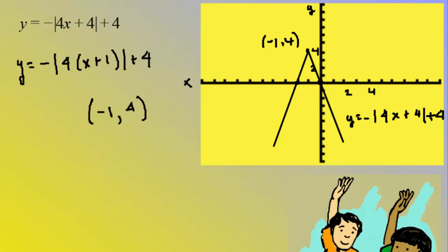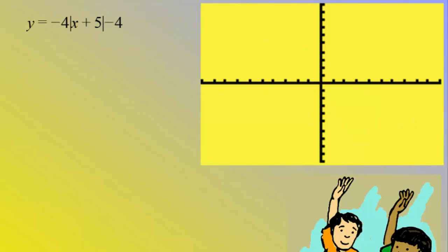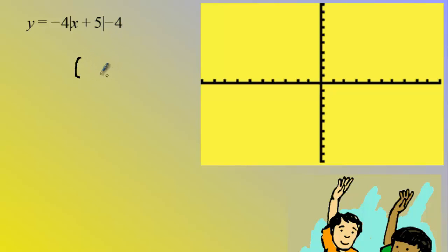I'm going to do four more examples — watch as many as you need until you feel like you understand it. Here's my next example where the four is outside, so this is a reflection over x meaning it opens down, a vertical stretch of four so my slope is going to be four. The horizontal translation is going to be left five and the vertical translation is down four, so I'll locate the vertex first: it's at negative five, negative four.